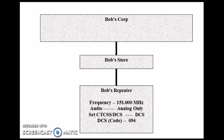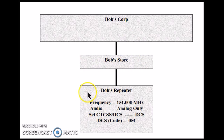Every job has got to have a plan, and here's the plan to monitor the radio operation at Bob's Corporation. Bob's Corporation has been set into the system box. Bob has a store, which relates to the group box, and Bob also has a repeater, which relates to the channel box. Bob has chosen a frequency of 151.000 megahertz, set for analog only audio. On the CTCSS and/or DCS selection, Bob chose DCS — digital coded squelch — with a code of 054. Now the order of things to do is to place this into the scanner.